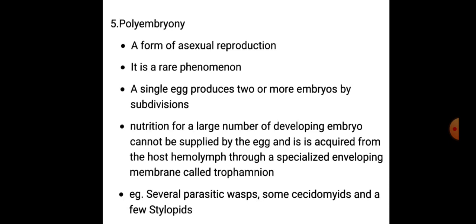Examples of polyembryony: several parasitic wasps, some Cecidomyiidae, and a few Strepsiptera. In polyembryony, a single egg forms two or more embryos due to subdivision; when many embryos develop from one egg, they obtain nutrition from the host's hemolymph via a specialized membrane called the trophamnion.